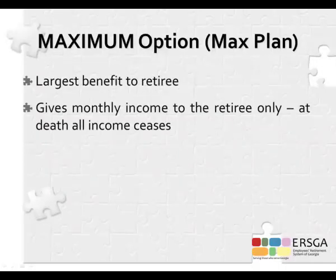The first payout option on page 7 and your benefit estimate is the maximum option. The maximum payment option provides the retiree with the greatest monthly benefit in retirement. However, at death, all payments cease. If the total payments received do not exceed the employee contributions account upon the retiree's death, the named beneficiary will receive the remaining funds as a lump-sum payment.